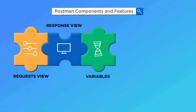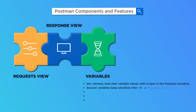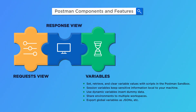The variables feature of Postman helps us to set, retrieve, and clear variable values with scripts in the Postman sandbox. Session variables keep sensitive information local to your machine. You can use dynamic variables to insert dummy data, share environments to multiple workspaces, and export global variables as JSONs.